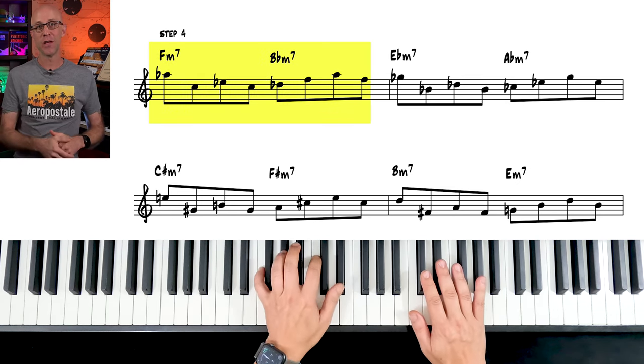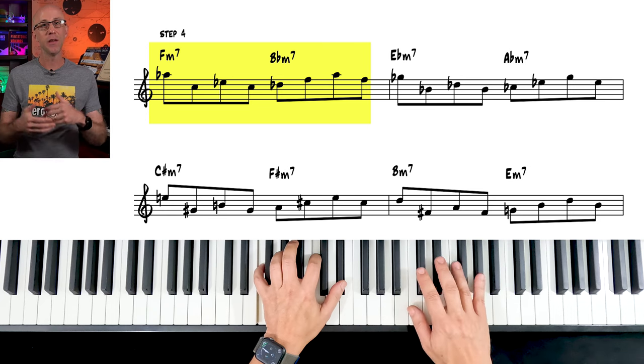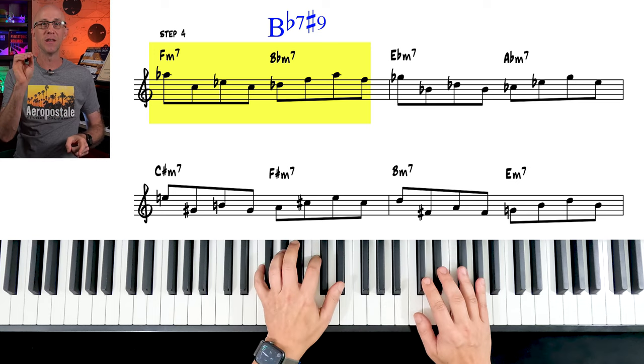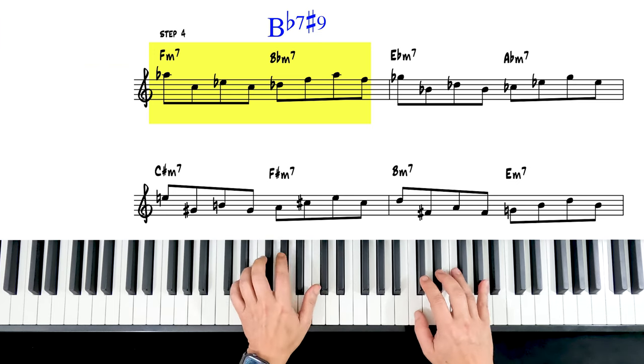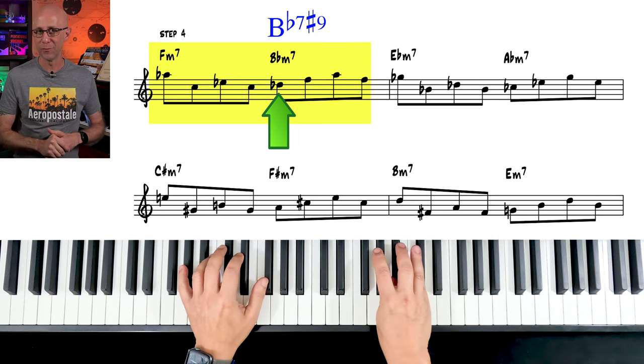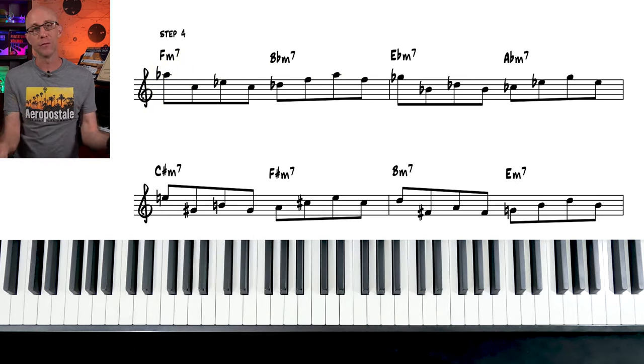So on an F minor 7 to Bb minor 7, we would play this. But on an F minor 7 to Bb7, we could play the exact same thing. Now the Db is acting as the sharp 9 of the Bb7. But for this step, we're just going to think of minor 7 chords.